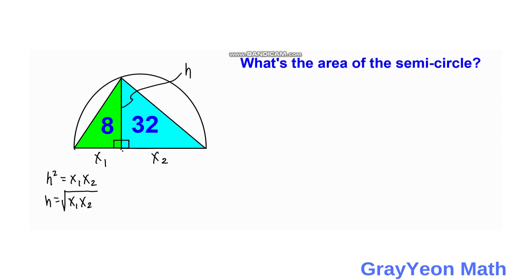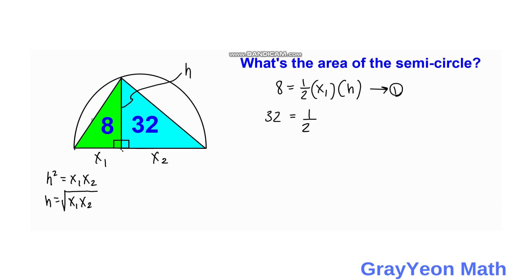Next, we write the area formula for the two triangles. For the green triangle: 8 equals one half times x1 times h — this is equation 1. For the blue triangle: 32 equals one half times x2 times h — this is equation 2.